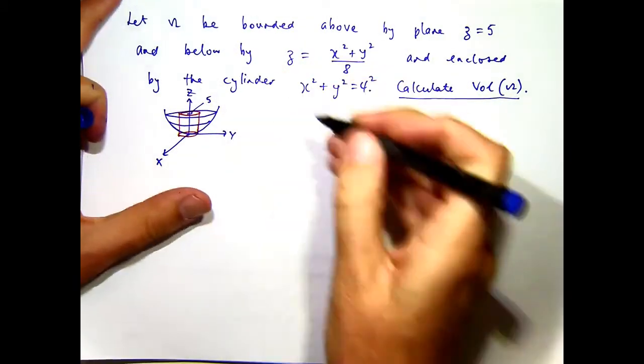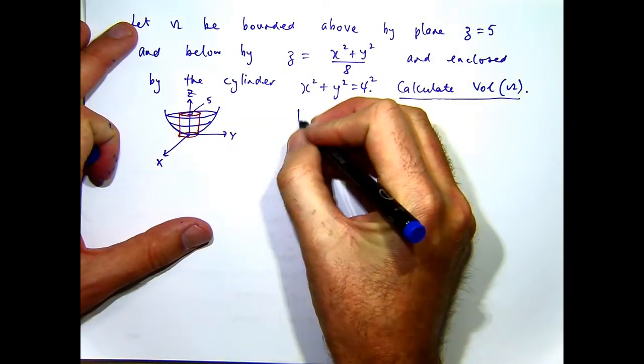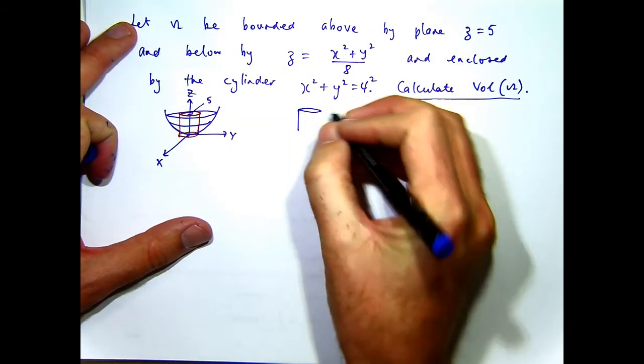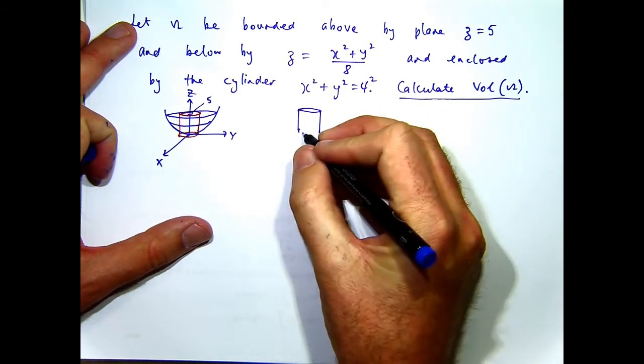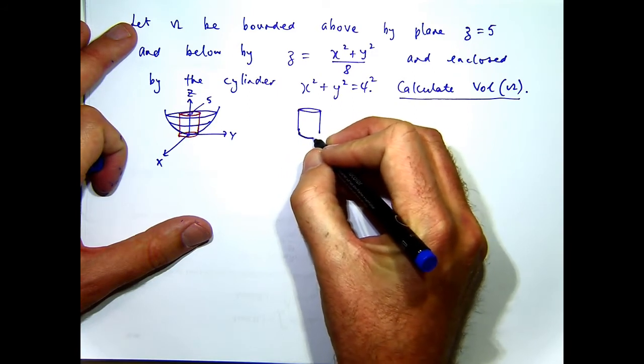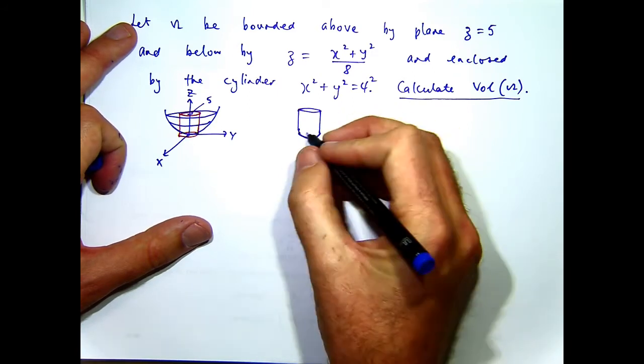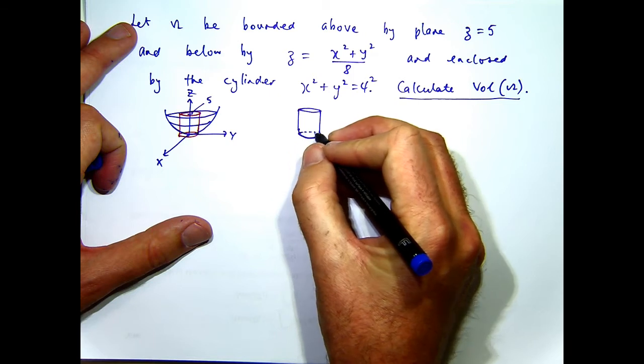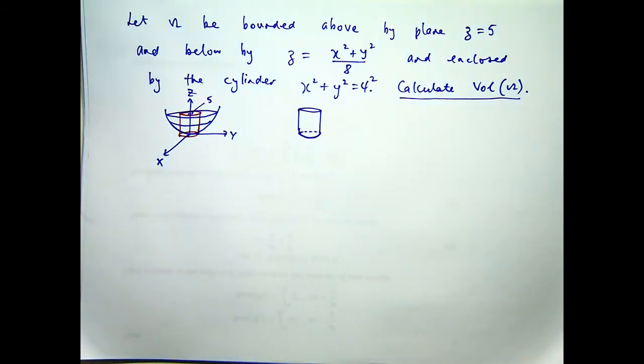So you've got essentially, if I want to draw this a different way, I would draw it like this just without the axes. It's probably not a very good picture. But you've got sort of a cylinder coming down and then a curved bottom rather than a flat bottom. You've got a curved bottom at the bottom of the cylinder rather than a flat bottom.